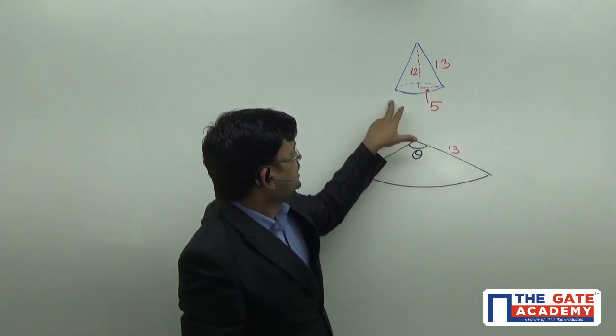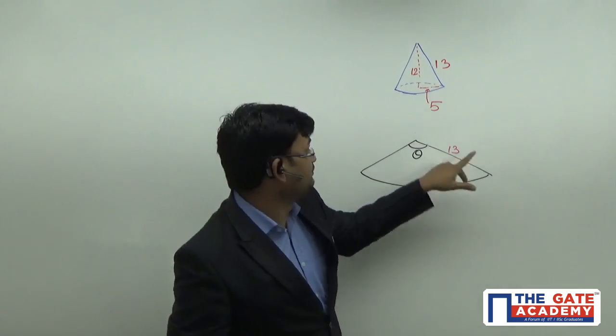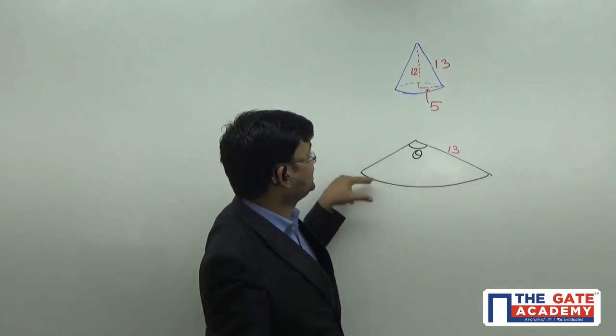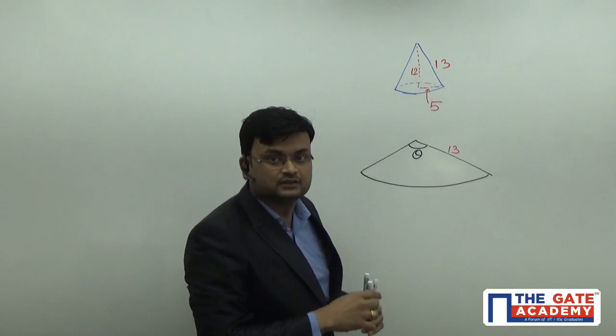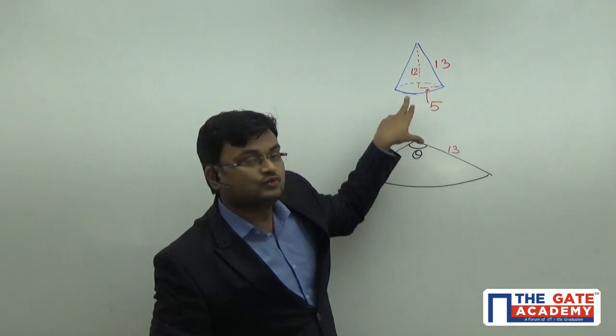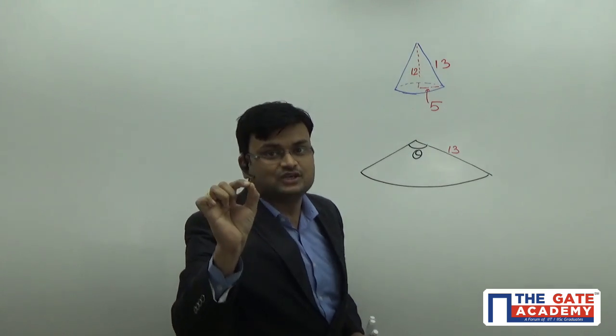Now, let's see. What is the length of this arc? This is also very simple. Because this particular length is nothing but the circumference of the base of the cone. So, what is the circumference? By using the value radius is equal to 5, it is 2πr. Everyone knows this.